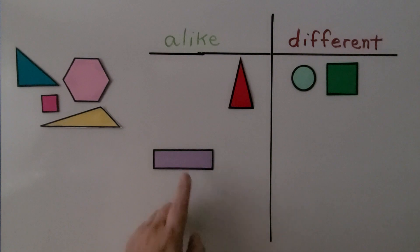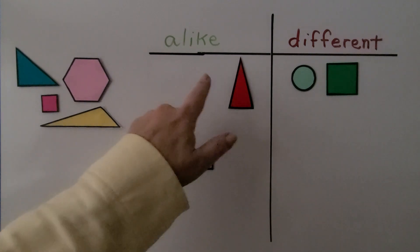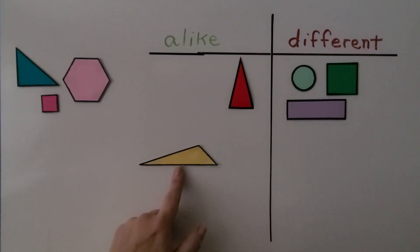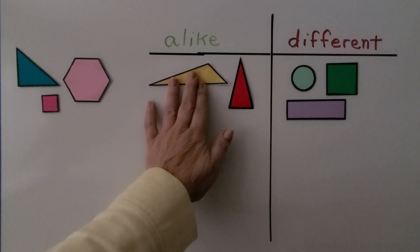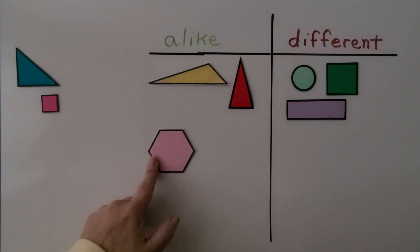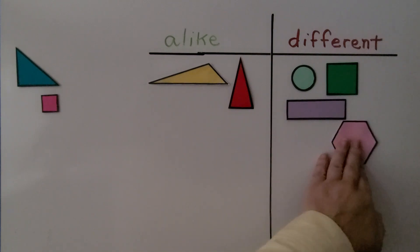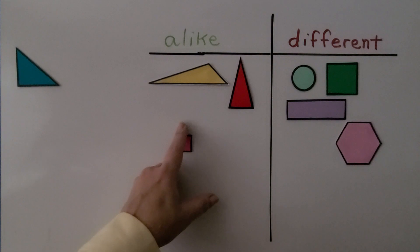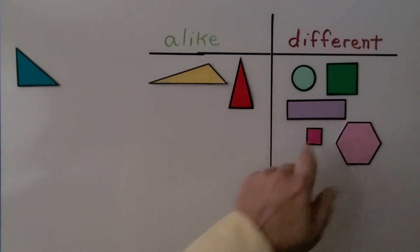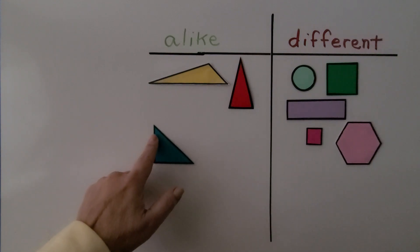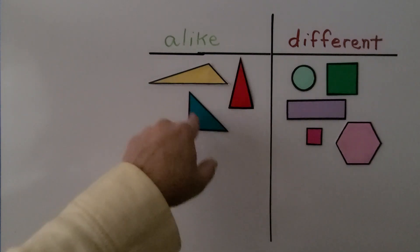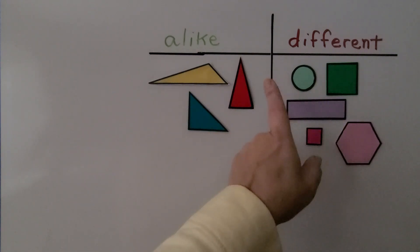Here we have another rectangle with four sides — that's not like three sides, so that's also different. Here we have another triangle with three sides — yes, that will go in our 'alike' three-sides set. Here we have a hexagon with six sides — that's not like three sides, so it's different. Here we have another square with four sides — it needs three sides to be alike, so it goes in the 'different' set. And here we have another triangle with three sides — yes, we can put it with the three-sides set. These are all alike because they have three sides, and the others are different because they don't have three sides.